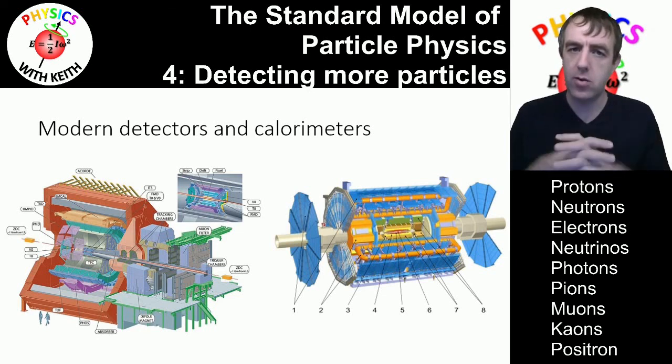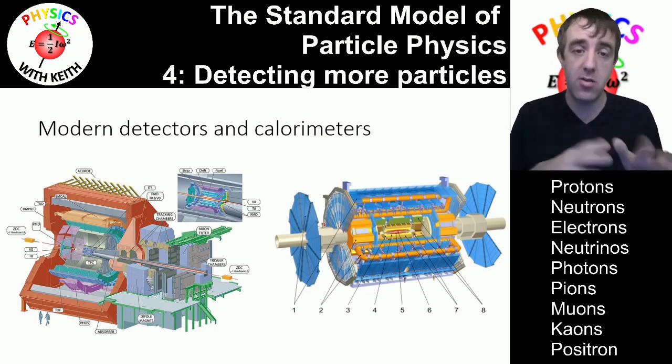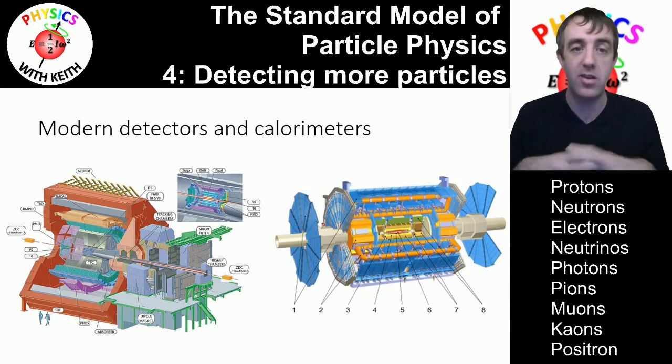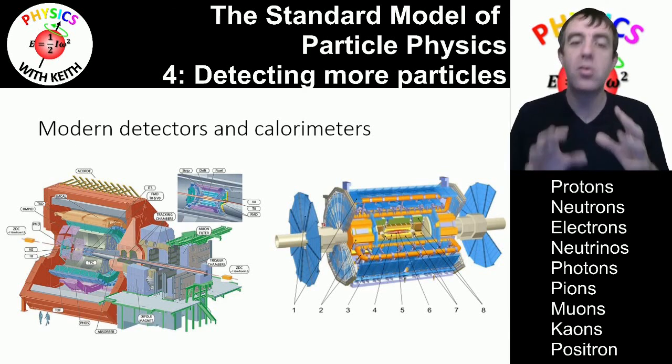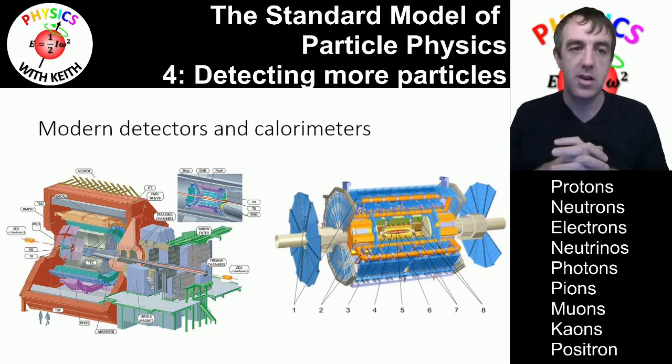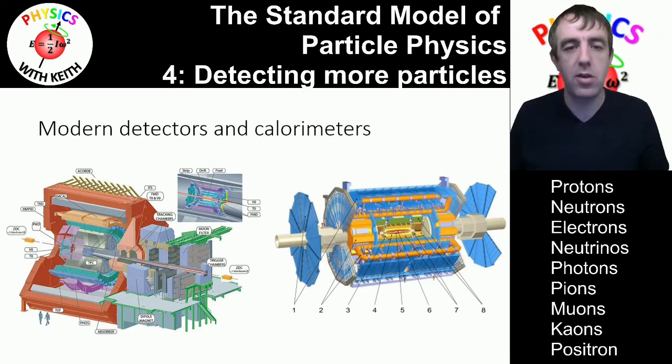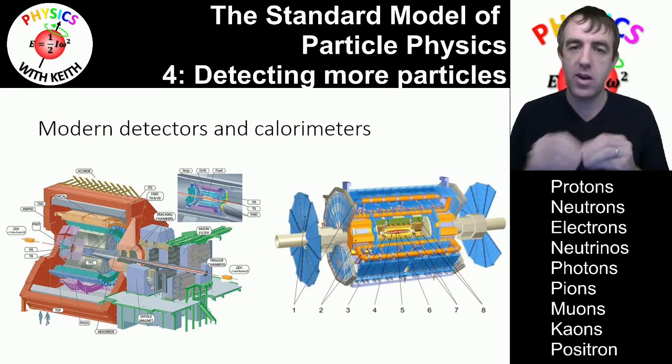But detectors got more and more sophisticated and they involved things called calorimeters. Calorimeter is used to measure the energy. And you might have done some calorimetry earlier on in school, perhaps in biology or chemistry, you burn a crisp and use it to heat up water and measure the temperature change in water.